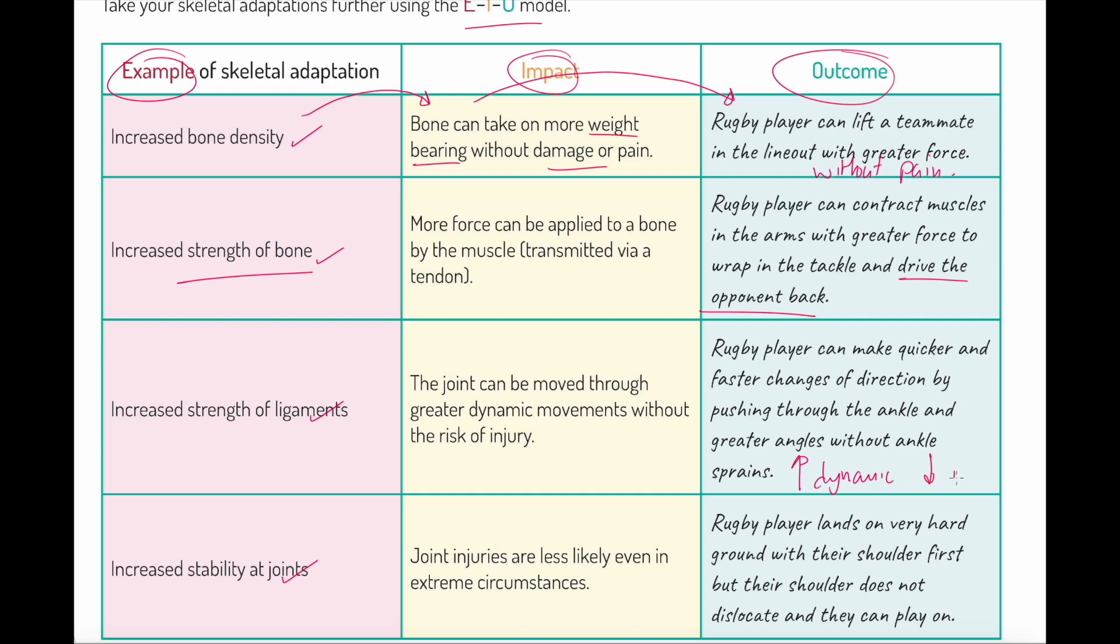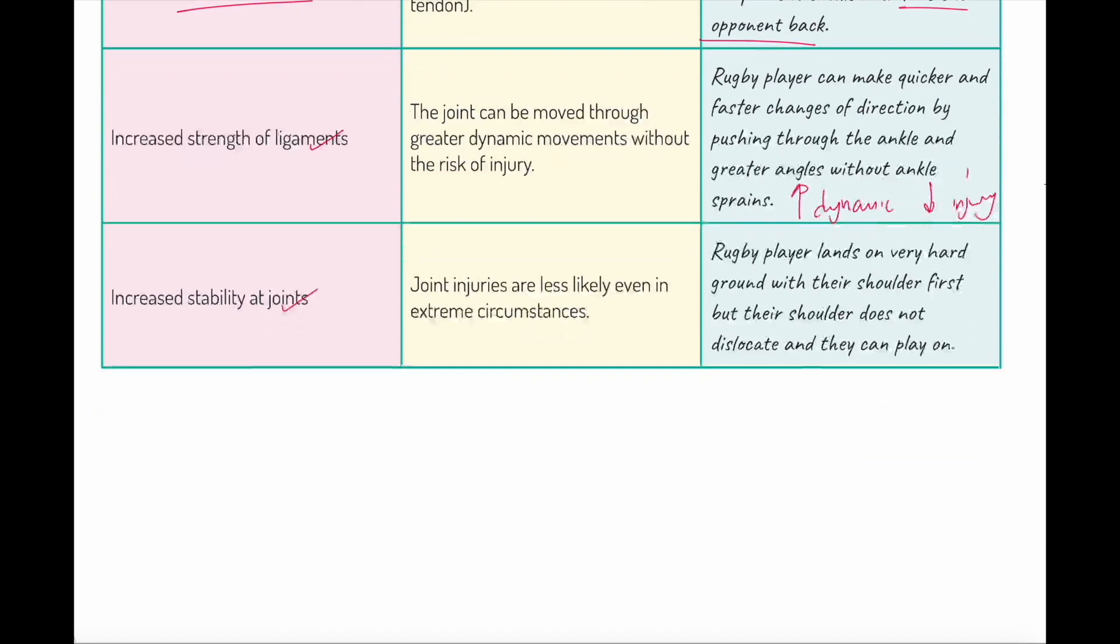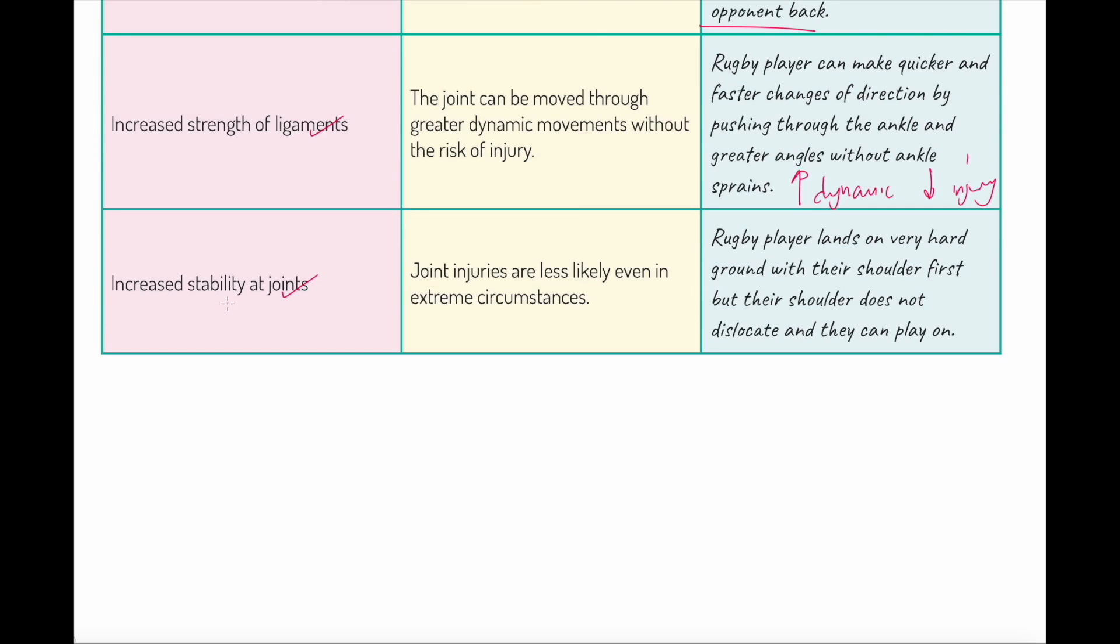I could go further—they're quicker to push off, therefore they beat their opponent more regularly. We've got increased stability at the joint—joint injuries are less likely even in extreme circumstances. A rugby player lands on very hard ground with their shoulder first, but their shoulder does not dislocate and they can play on.